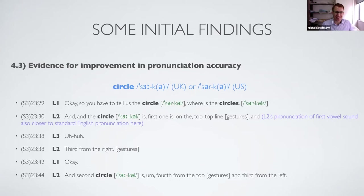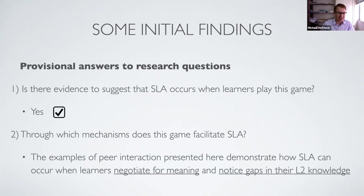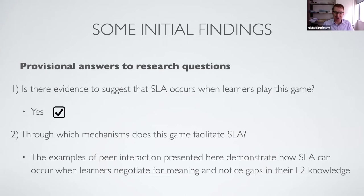To summarize my results: learners speak and listen a lot; there is good evidence for negotiation for meaning occurring; good evidence for learners noticing gaps in their L2; and evidence for vocabulary acquisition and improvements in grammatical and pronunciation accuracy, although the pronunciation evidence is still a little weak. To answer my research questions: yes, there is evidence suggesting SLA occurs when learners play this game, and many examples illustrate how negotiation for meaning and noticing can work in a peer-based communicative or task-based approach.